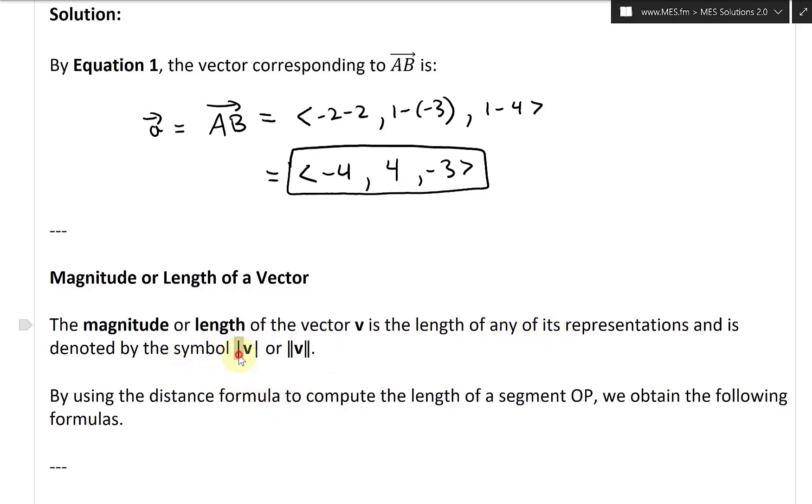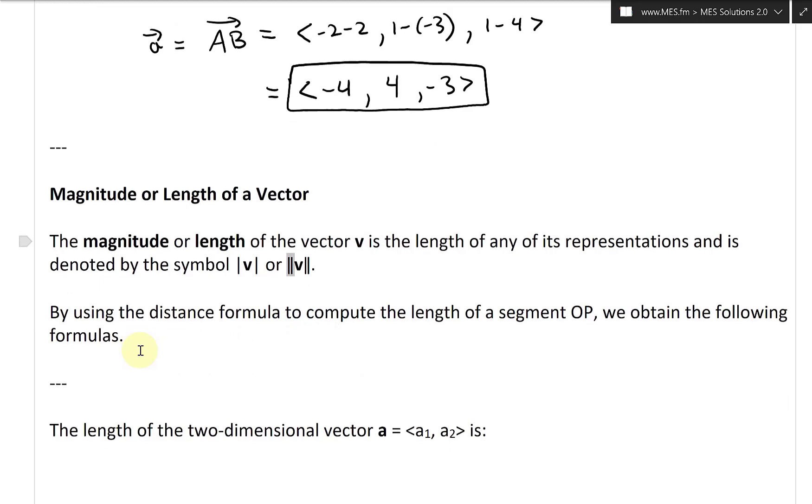symbol. You can have this vertical line, then the vector form right here, so the vector v, then close the line there. Or you have double lines, then v, then double lines. I typically see this one here when I use it more. Also this one, I can't really find this on my keyboard.